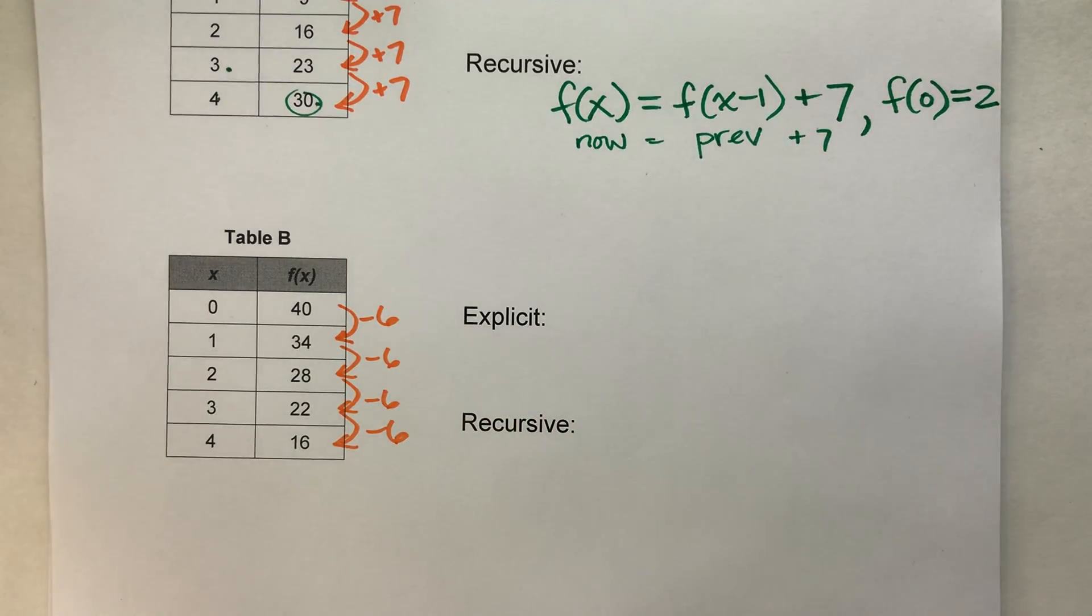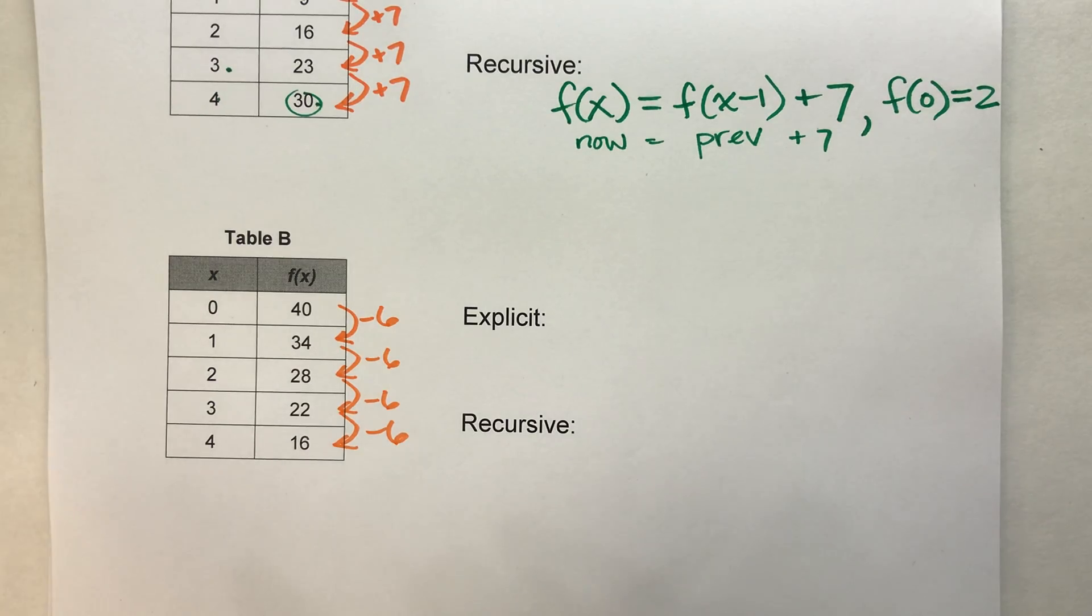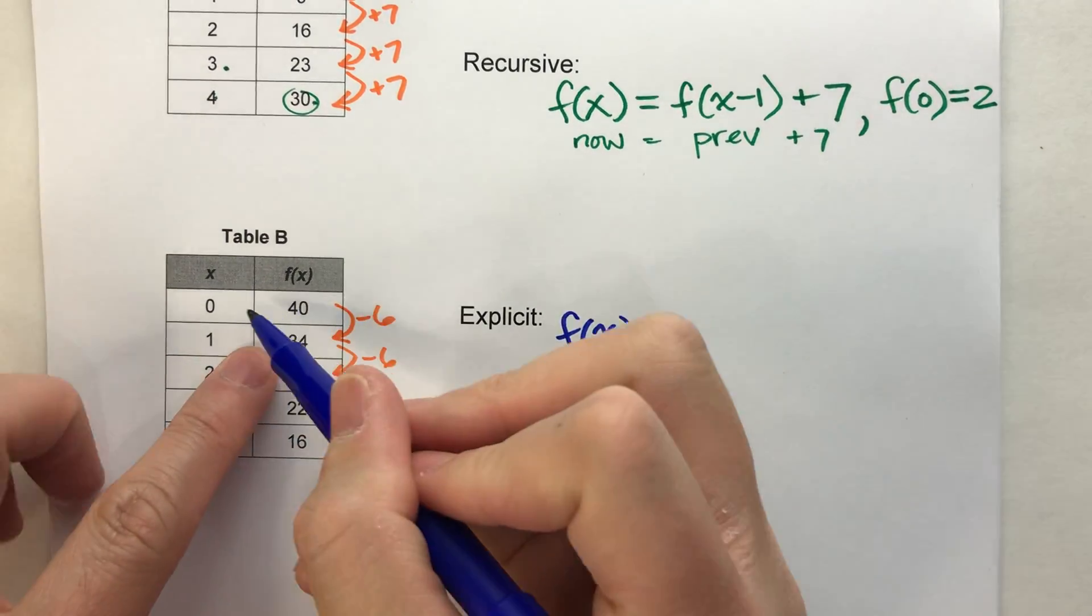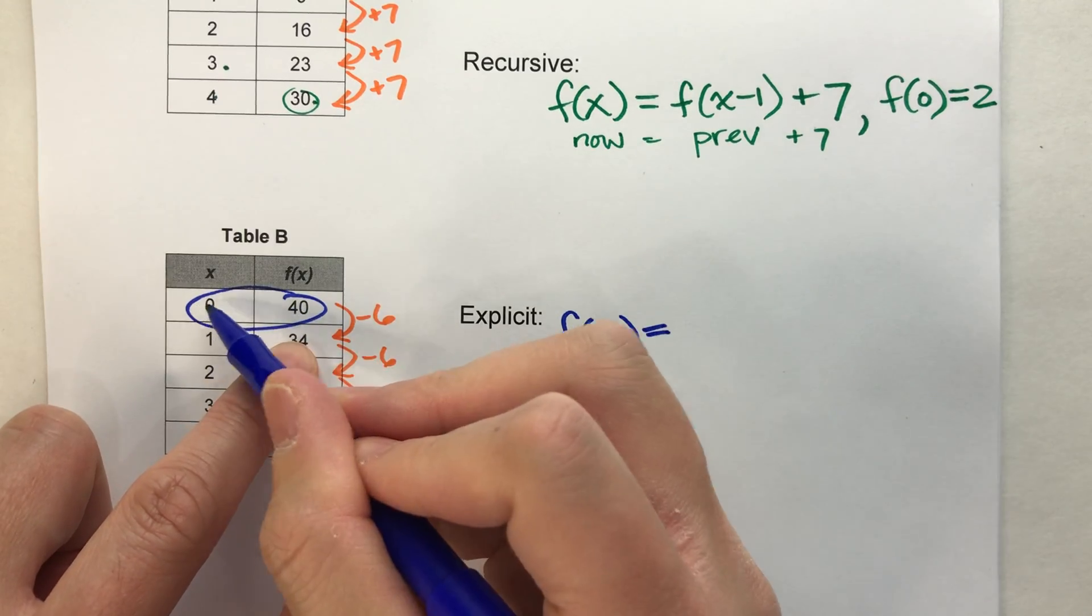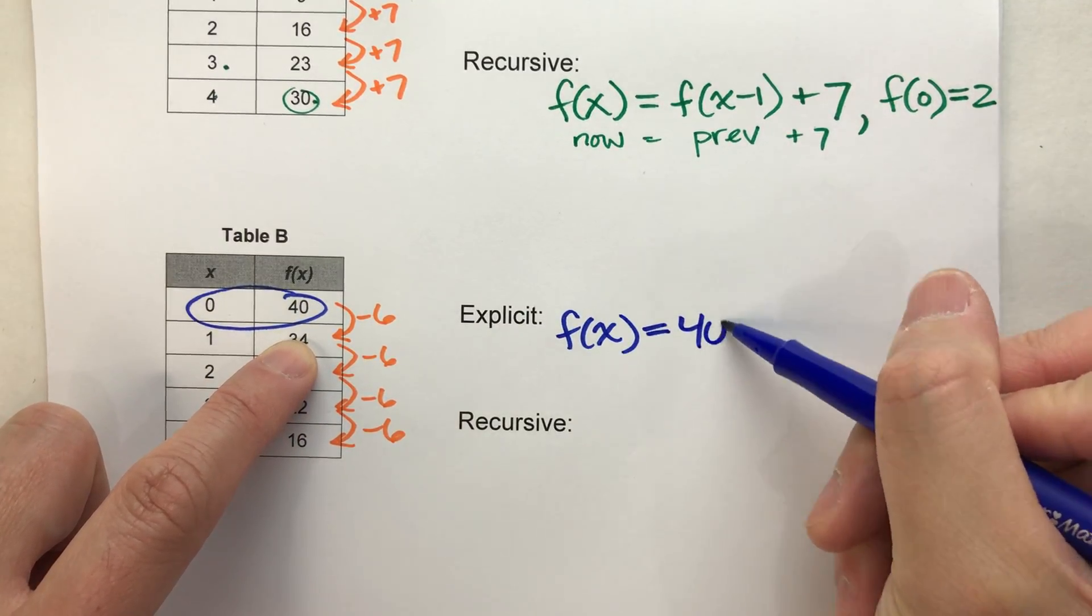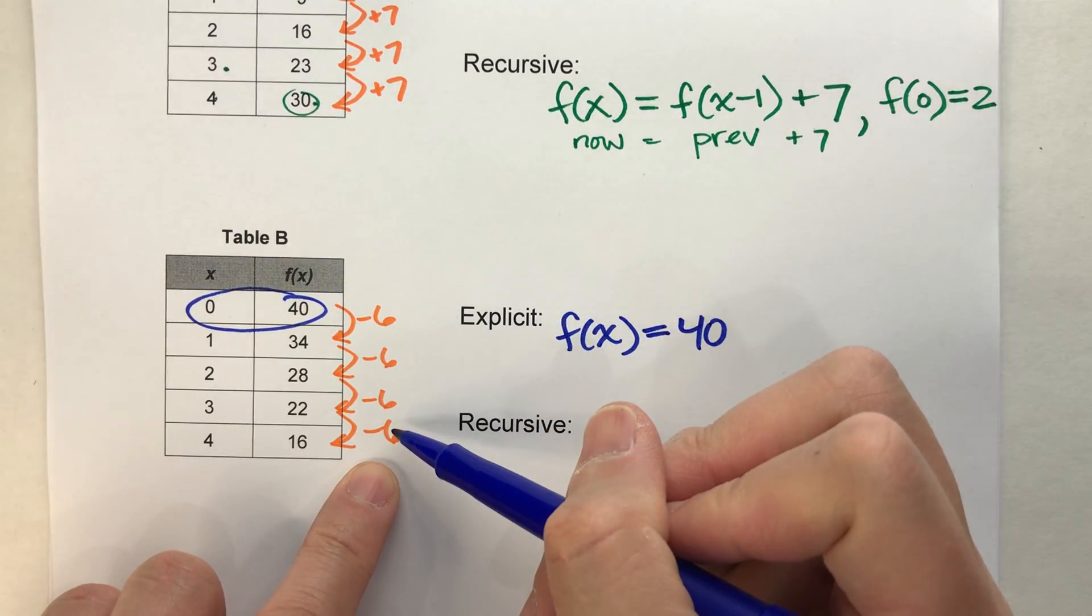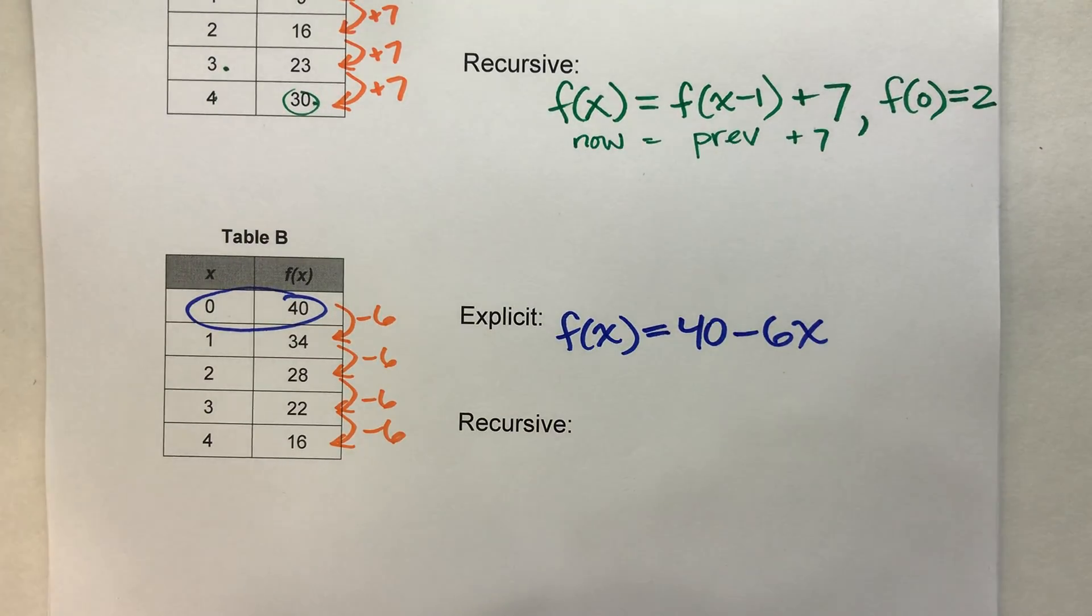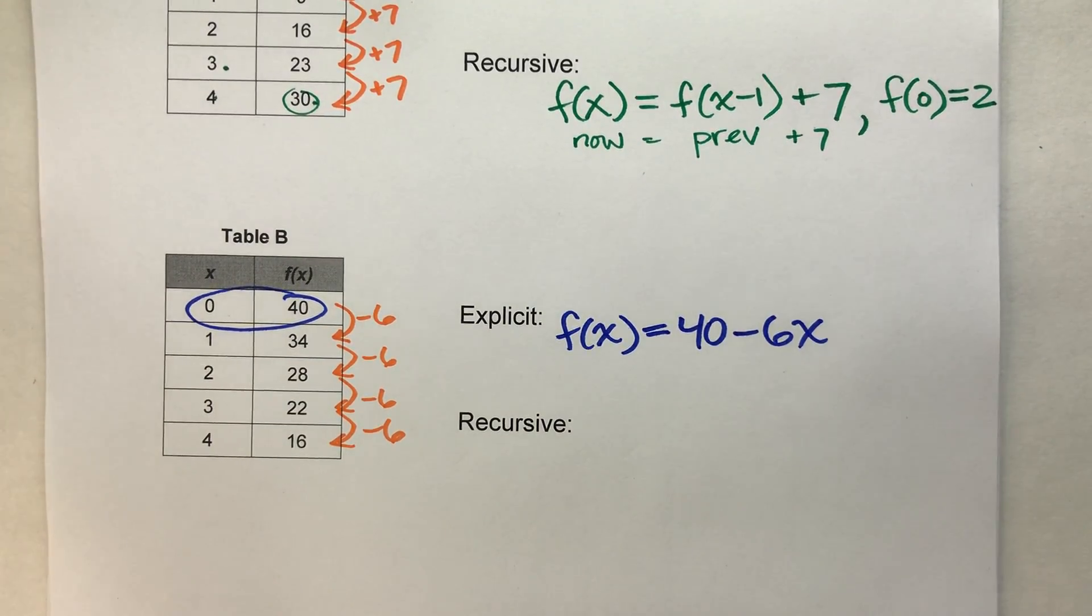So, writing the explicit equation, not too hard, because f of x equals, we know it started at 40 when x is 0. And we're repeatedly subtracting 6, so minus 6x. There's your explicit equation.